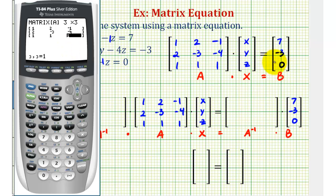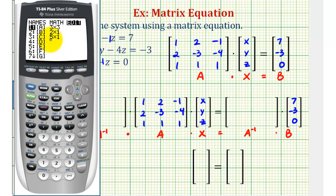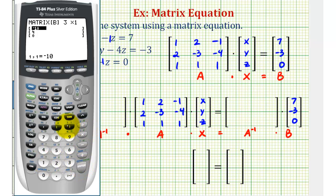Now let's go ahead and enter matrix B. So we'll press second matrix, right arrow to edit, arrow down to matrix B, enter. The dimensions are three by one — enter the elements.